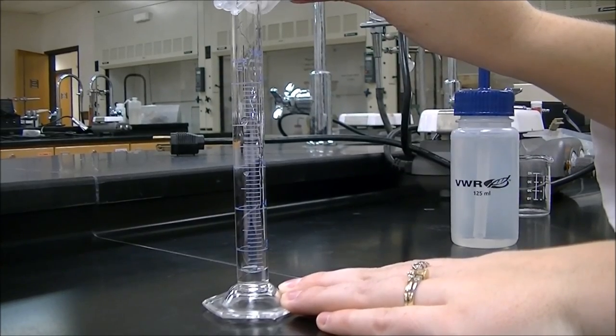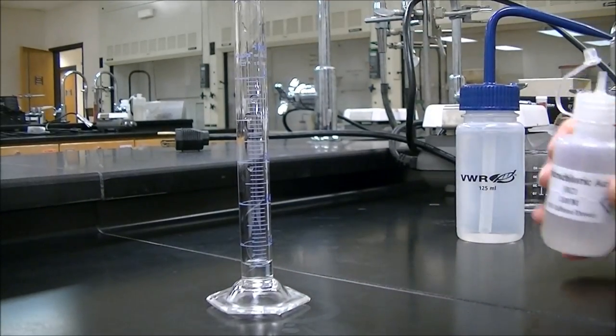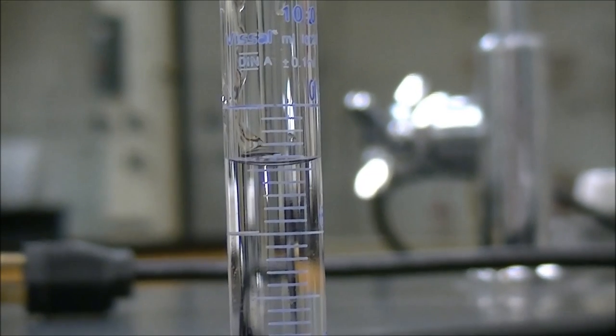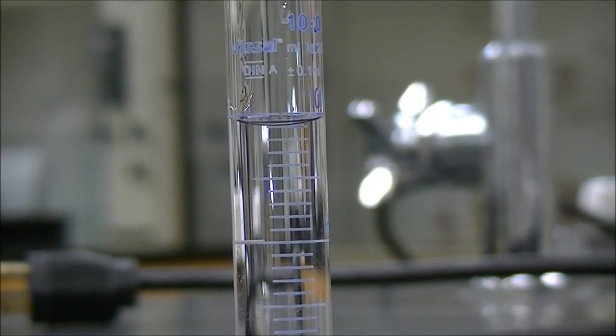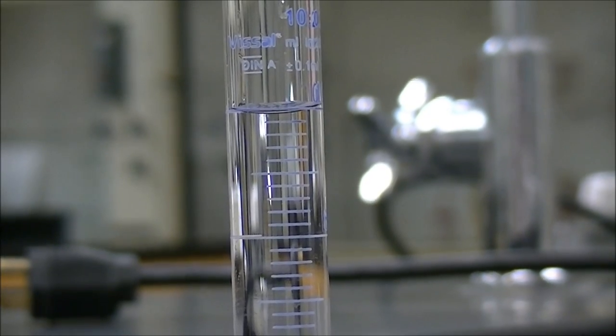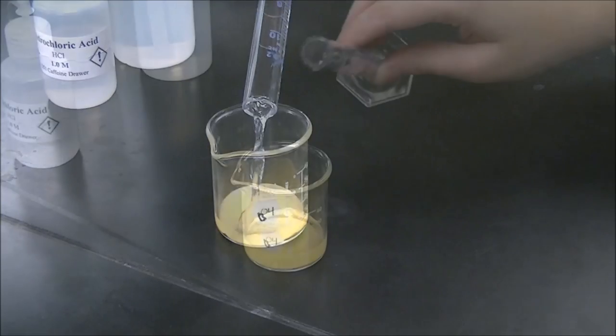In order to make a 0.1 molar solution of HCl, use 1 milliliter of 1 molar HCl and 9 milliliters of water. Do this twice for a total of 40 milliliters.